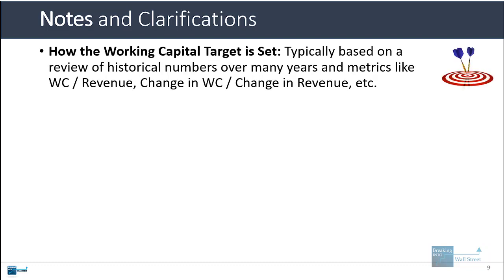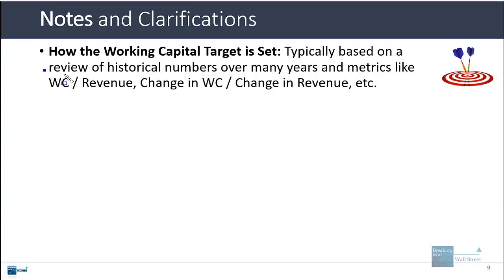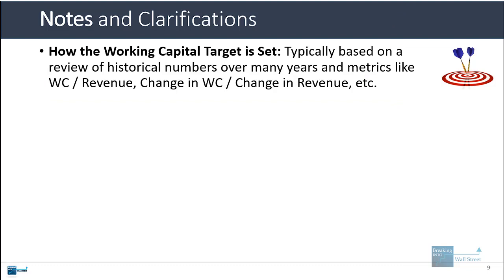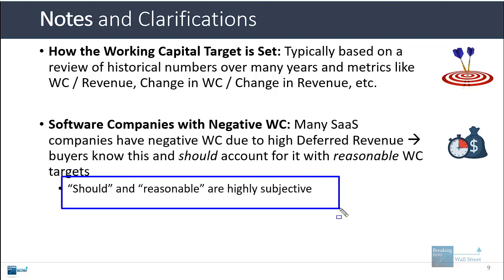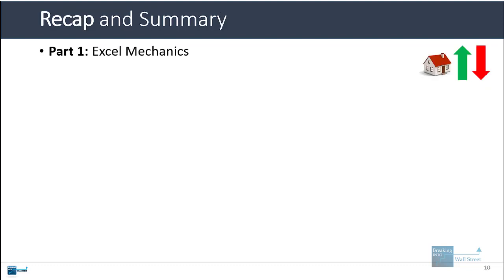How is the working capital target set? The $100 in this example was arbitrary, but in real life you'd look at things like working capital as a percent of revenue, or the change in working capital as a percent of the change in revenue, and see how these trend over time. For companies with negative working capital — like many SaaS companies with high deferred revenue balances — buyers should account for this with reasonable working capital targets, though 'reasonable' is highly subjective and you'll see quite a few arguments and disputes over this in these types of deals.